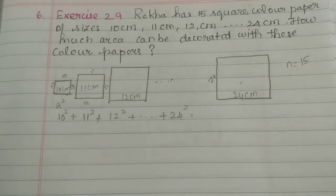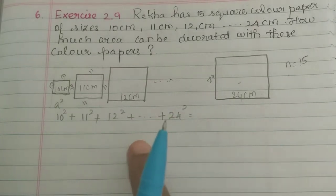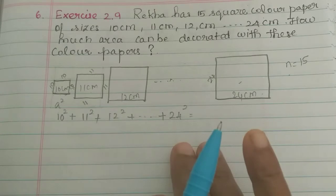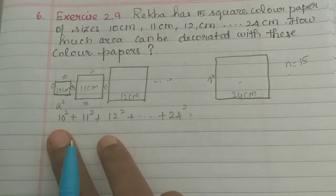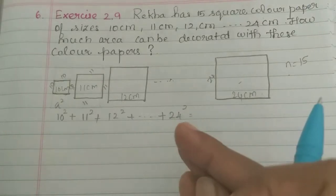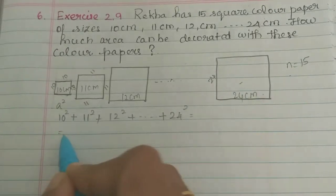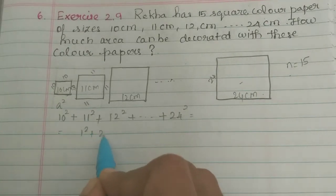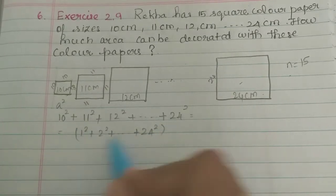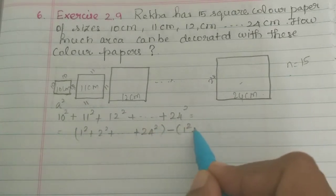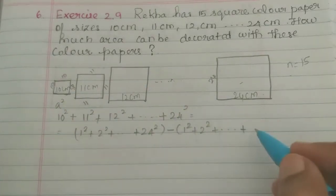We need to find this sum. Now, normally 1 square is the starting point, but this is 10 square starting. So we calculate 1 square plus 2 square plus etc. up to 24 square, minus 1 square plus 2 square plus etc. up to 9 square.